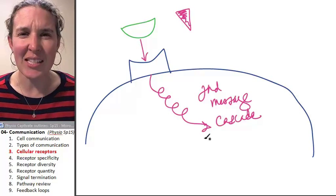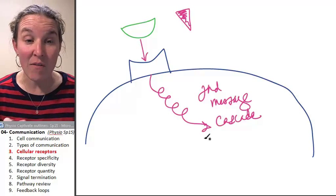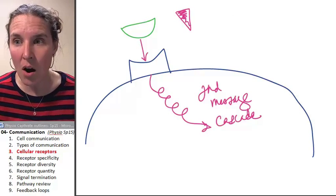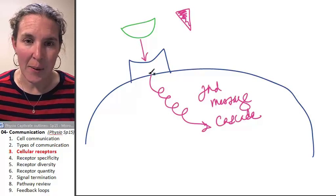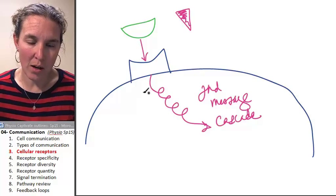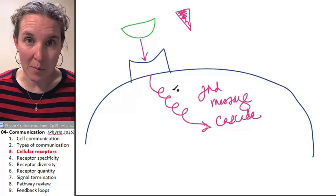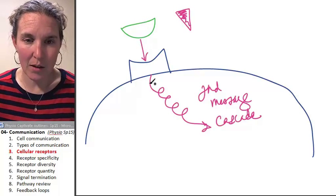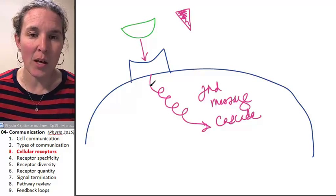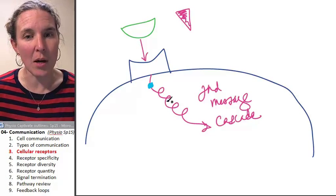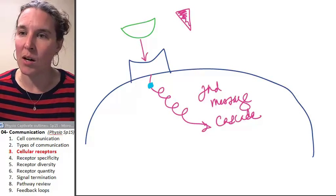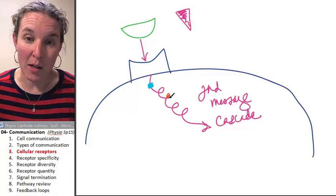A second messenger cascade is this cascade of chemical reactions, and there are things like this chemical, the binding of the receptor with the initiating signal will cause this molecule to turn into this molecule.